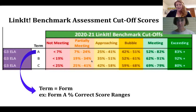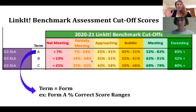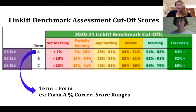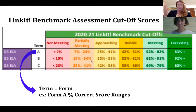The last assessment, Form C, is administered in the spring. For secondary schools, the assessment window is late April to early May — right before the NJSLA — so there's time to reteach or address any areas where students need more support before the final state assessment. At the elementary level, Form C is administered closer to the beginning of June.